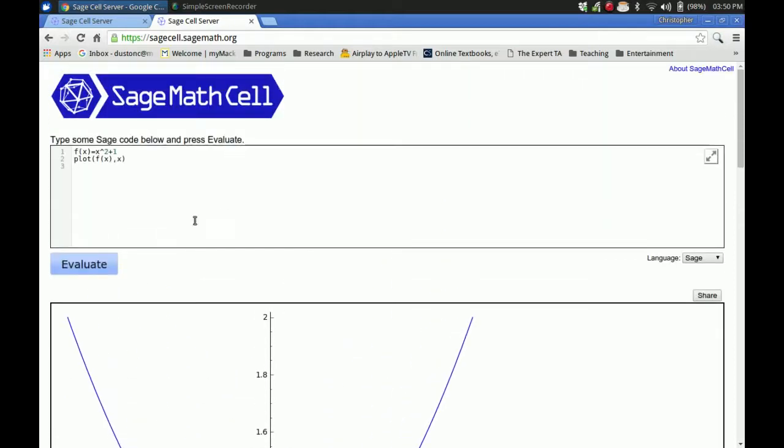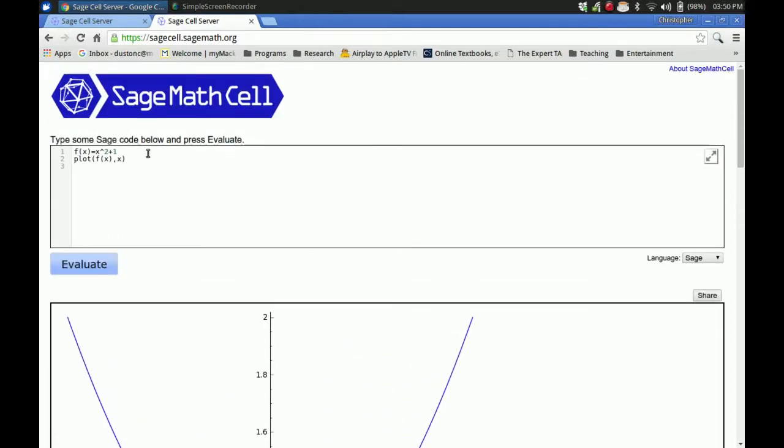The next thing you might want to do is plot two functions on the same graph for a comparison. So let's also define the function g of x 2 times x. So it happens that g of x is the slope of the function f of x at x equals 1. So let's say we want to plot that. Sage has a very simple mechanism for doing that,